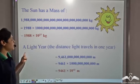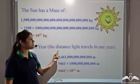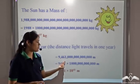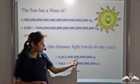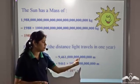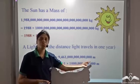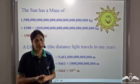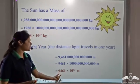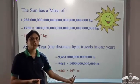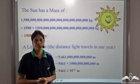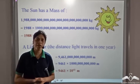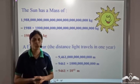For instance, a light year — the distance light travels in one year — is 9,461,000,000,000,000 meters. Wouldn't it be better to say it is 9461 into 10 to the power 12 meters? Yes, it is much more convenient, and that is why exponents were introduced.